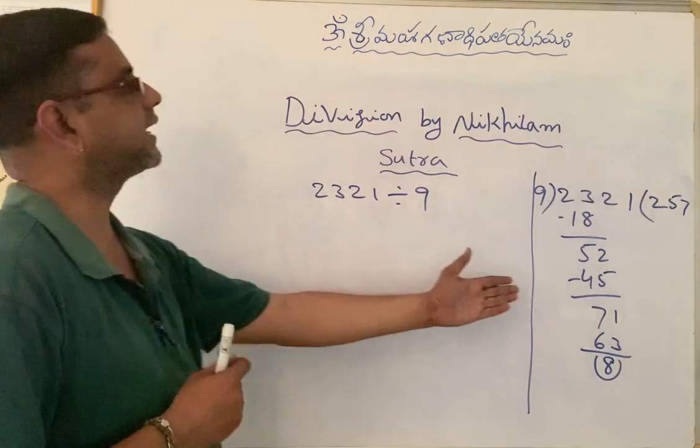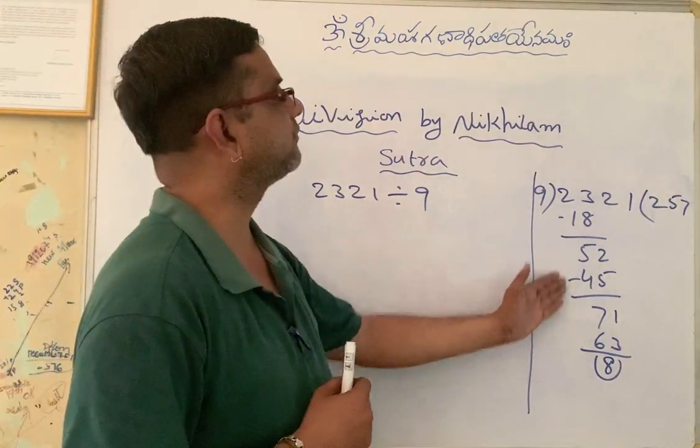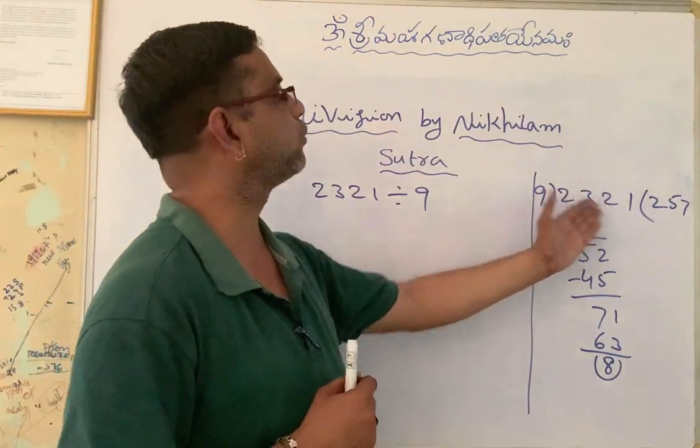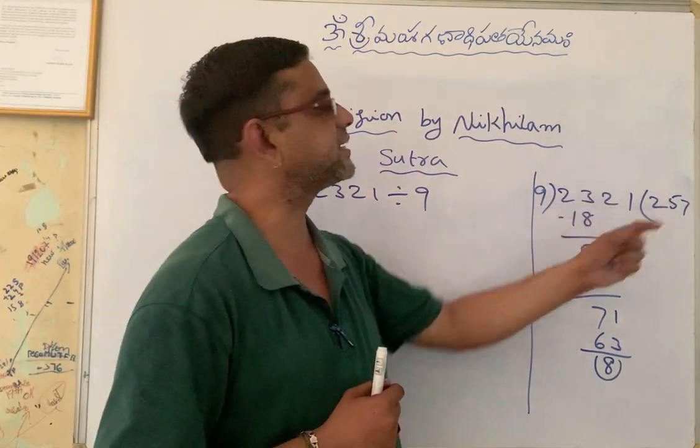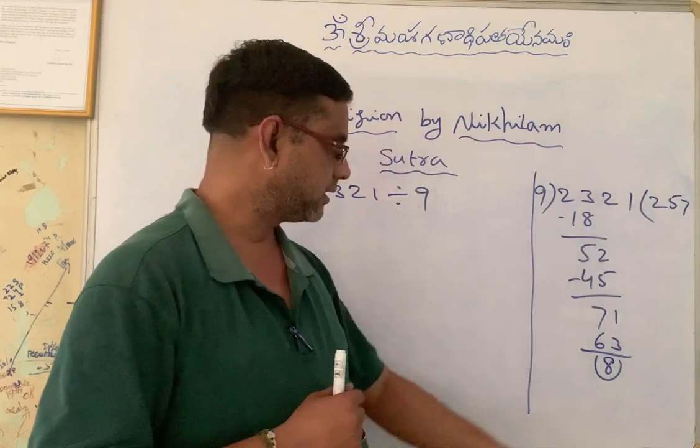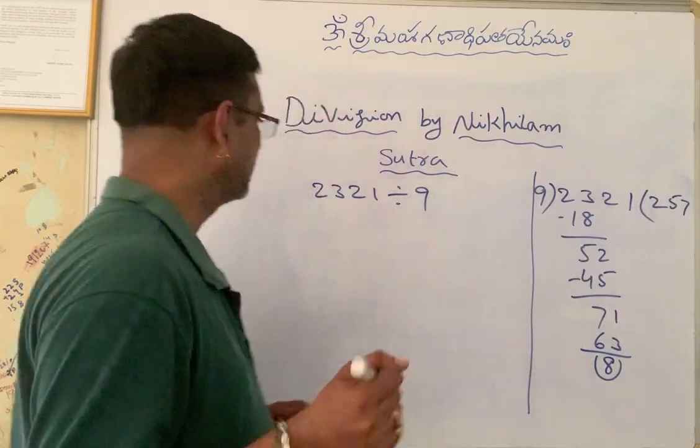Now this is the traditional method when we divide 2321 with 9. The quotient is 257 and the remainder is 8.